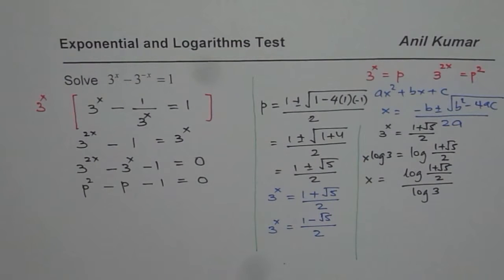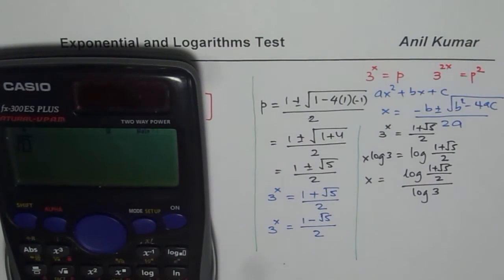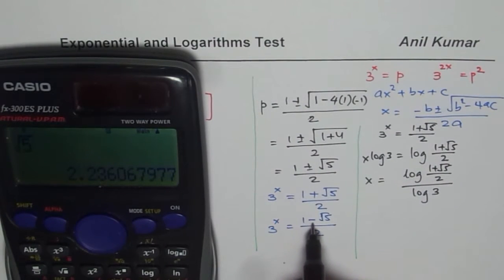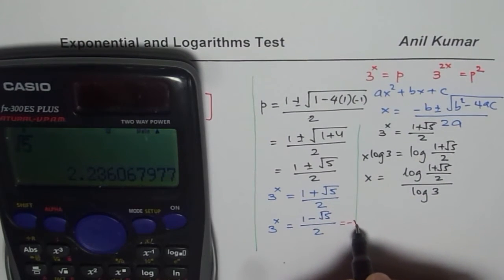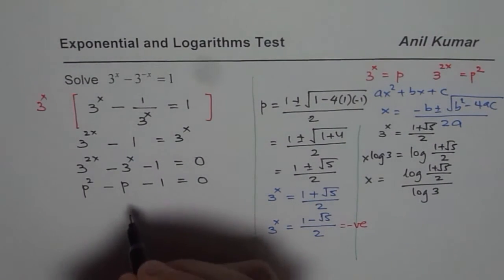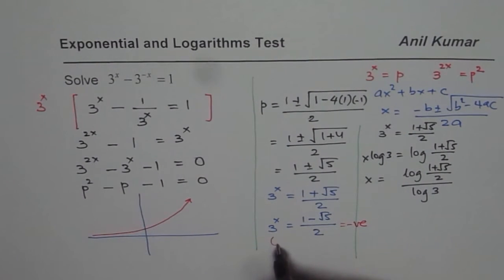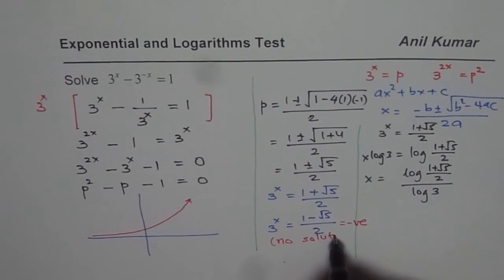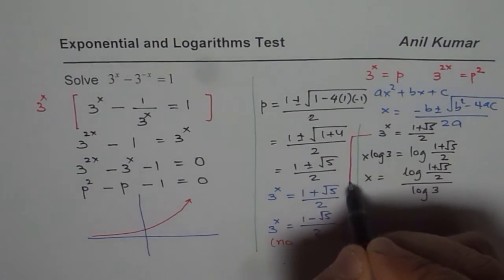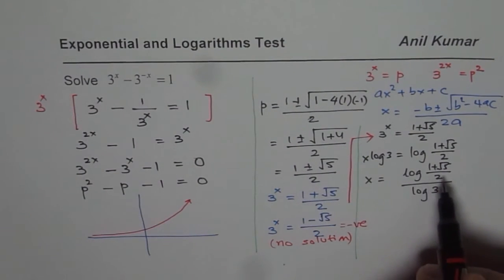Now let us look at the second equation: (1 minus square root of 5) over 2. The square root of 5 is approximately 2.23, so 1 minus 2.23 gives a negative value. Remember, 3 to the power of x is an exponential function — if we graph this function, it is always positive, never negative. So this second equation gives no solution. We only get a solution from the positive value of p. Therefore, we indeed have just one solution.